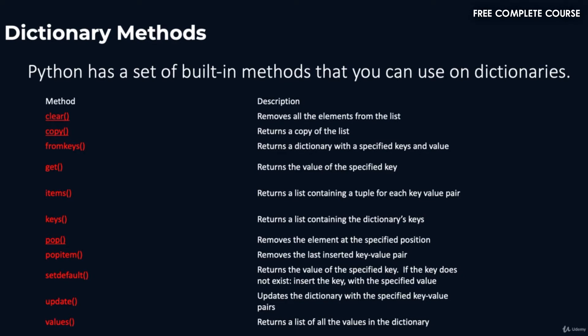Welcome back. In this video we're going to talk about dictionary methods. Python has a set of built-in methods that you can use on dictionaries. The first method is the clear method, which removes all the elements from the dictionary. The copy method returns a copy of the dictionary. The fromkeys method returns a dictionary with specified keys and a value. The get method returns the value of a specified key.